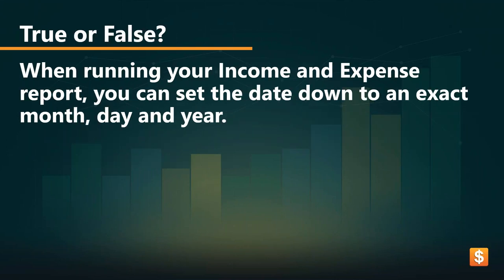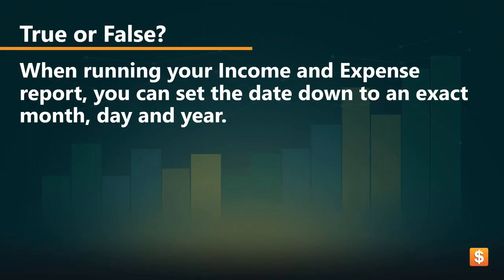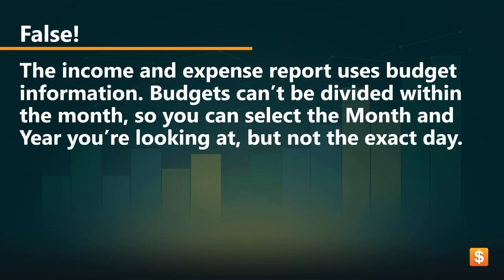Next up, true or false: when running your income and expense report, you can set the date down to an exact month, day, and year. The answer is false. The income and expense report uses budget information, and since budgets can't be divided within a month, you can only select down to a month and year — not an exact day.